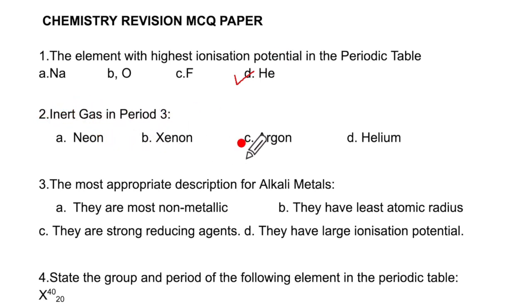Number two, inert gas in period 3 will be argon. Third, the most appropriate description for alkali metals. They are non-metallic, no. They have least atomic radius, no. They are strong reducing agent, yes. They have large IP, no, they have small IP. So C is the correct option.